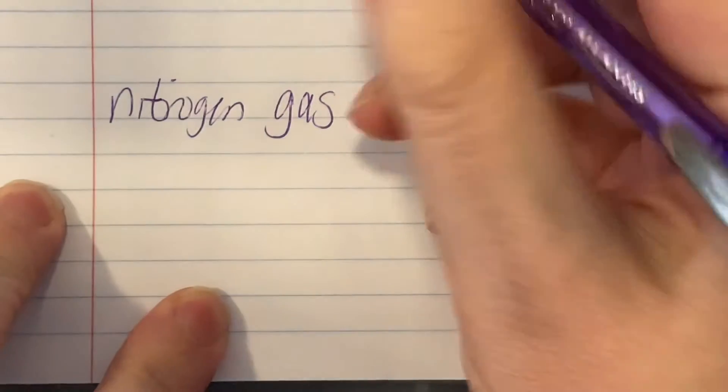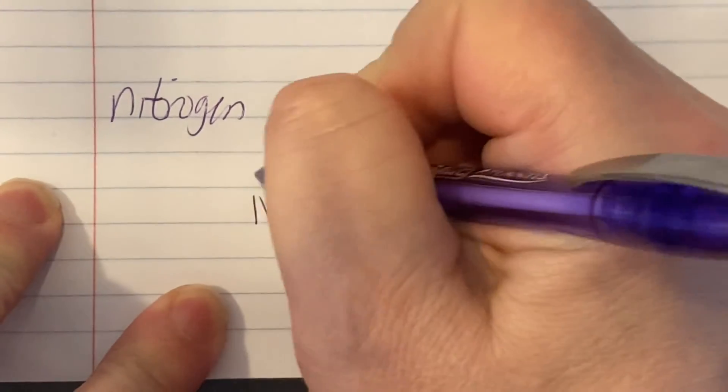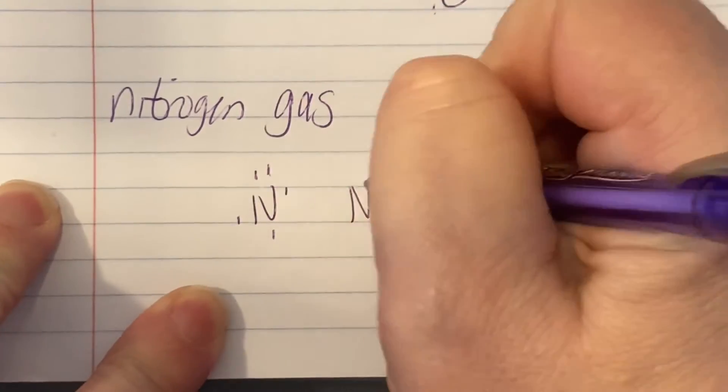All right, our last one is nitrogen gas. Again, nitrogen is N2. Since there's only two of them, I'm just going to write them side by side.